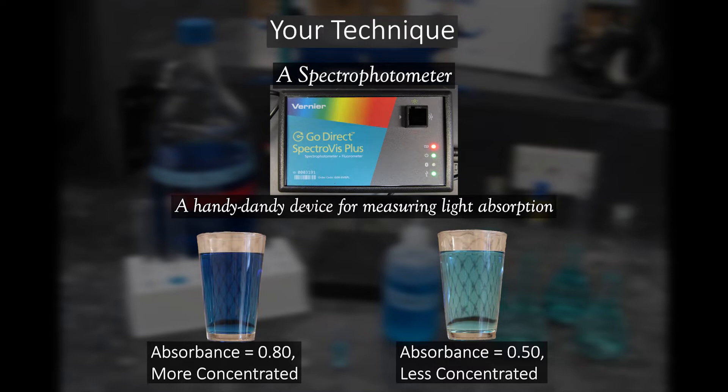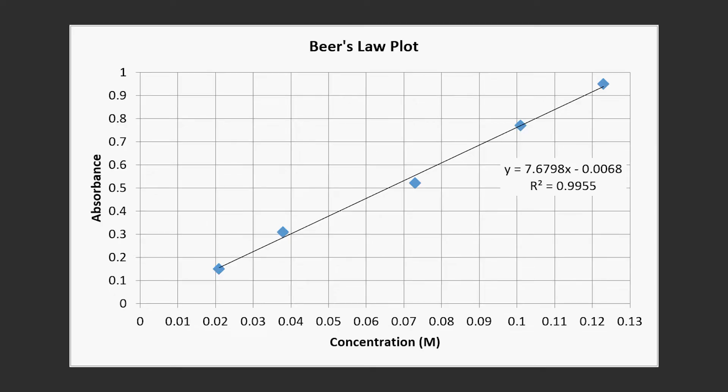The higher the absorbance, the bigger the number. Once you know that, you can use a chart like this one to translate the solution's absorbance into a concentration. These plots of absorbance versus concentration are called Beer's Law plots.